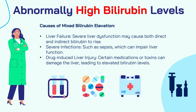There are also three causes of mixed bilirubin elevation, meaning pathological processes that elevate both the conjugated and unconjugated forms as well as total bilirubin. These include: liver failure, where severe liver dysfunction causes both direct and indirect bilirubin to rise; severe infections such as sepsis, which can impair liver function, raising both forms; and drug-induced liver injury, where certain medications or toxins damage the liver, leading to elevated bilirubin in both the direct and indirect forms.